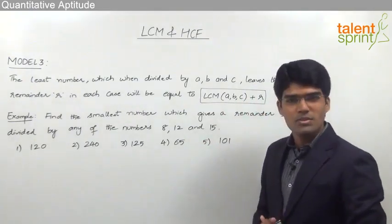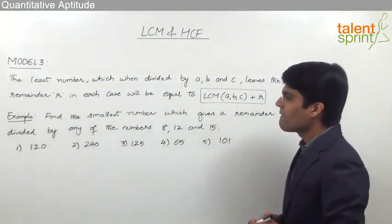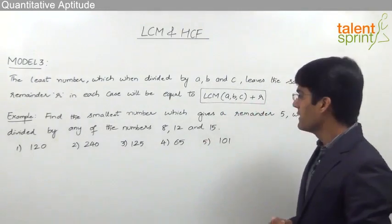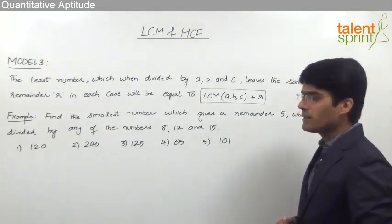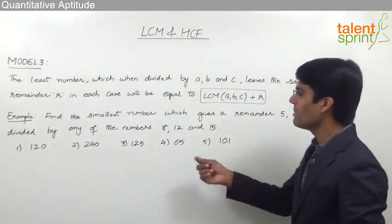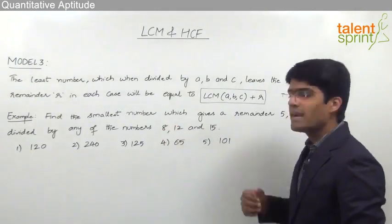Let us take an example based on this concept. The question here is find the smallest number which gives a remainder 5 when divided by any of the numbers 8, 12 and 15.